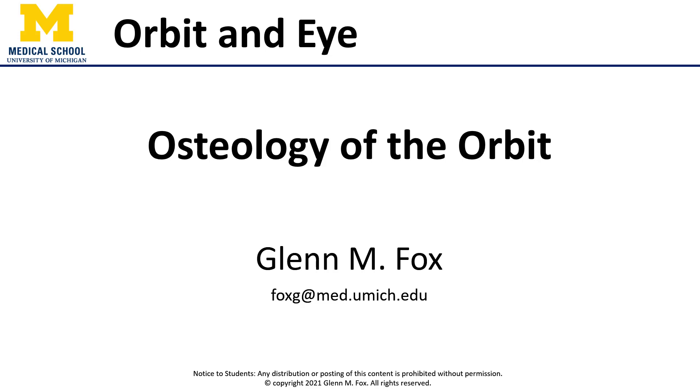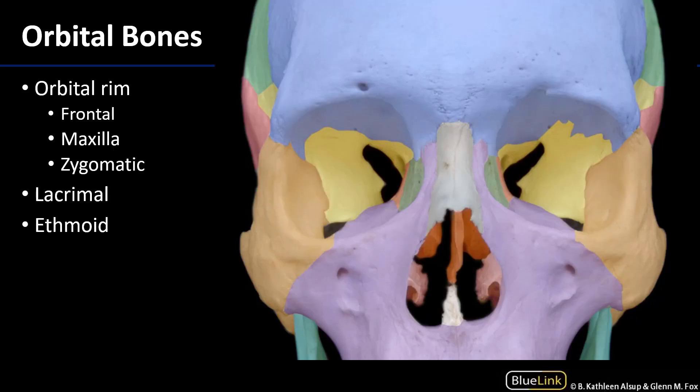Hello everyone, this is Dr. Fox. Let's talk about the osteology of the orbit. I'd like to start by using the color-coded skull so that we're not limited or encumbered by weak or missing sutures between these bones, so that we can all see their margins in a way that is as unambiguous as possible. So let's start with the orbital rim.